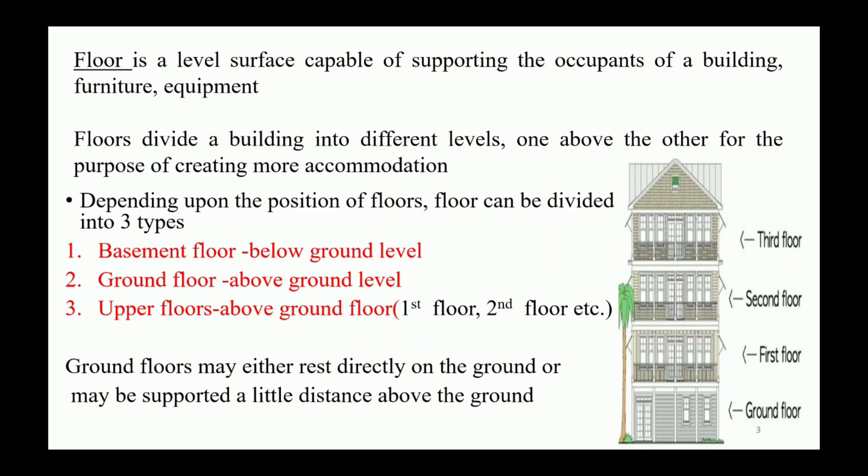Based on the position of floor, it can be classified into three types: basement floor, ground floor, and upper floors. Basement floor is just below the ground level and ground floor is just above ground surface, so they may directly rest on ground or may be supported a little distance above the ground level. Upper floors lie above the ground floor level, so based on position they can be named as first floor, second floor, etc.